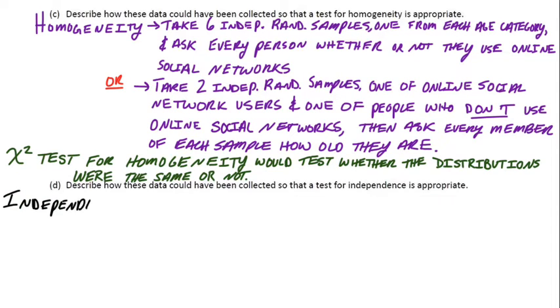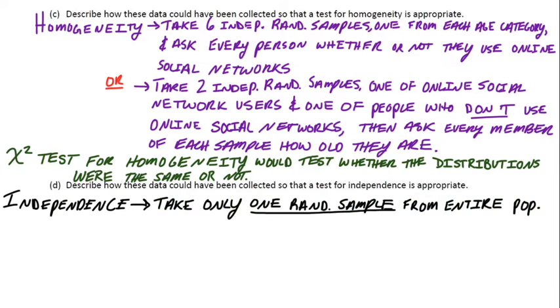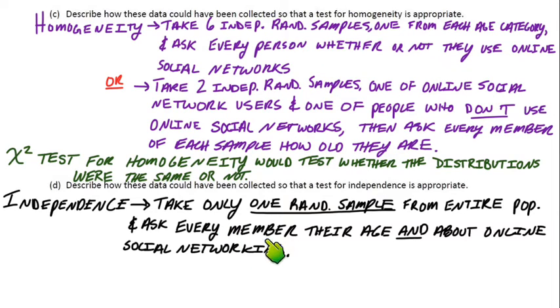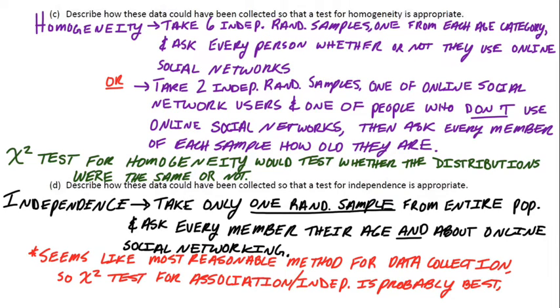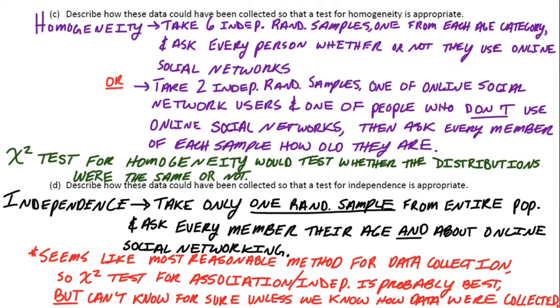Part D: What about the independence approach? For independence, you would only take one overall random sample from the entire population and ask every member their age and about online social networking. So you take one big sample and ask them two questions: your age and whether or not you use social networks. That actually seems the most reasonable and appropriate method for data collection. In this case, the chi-squared test for independence is probably the best, but we can't know for sure unless we know how the data were collected.